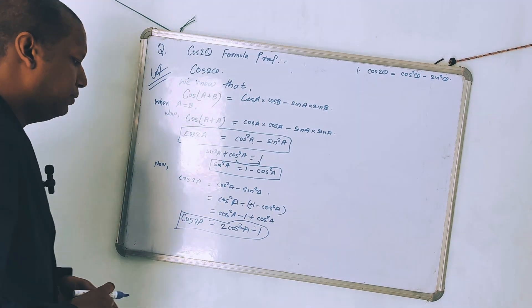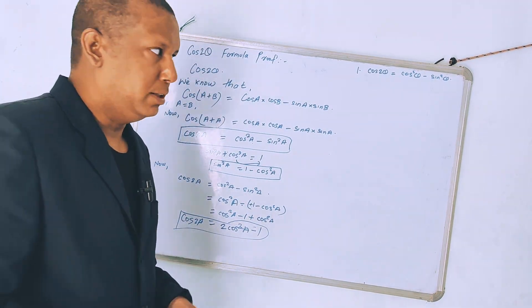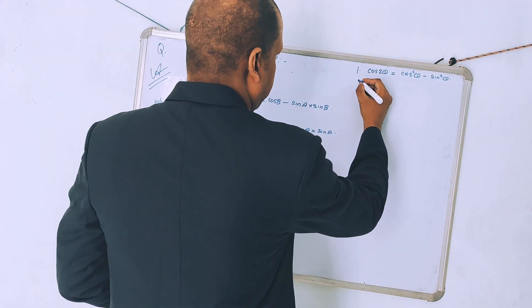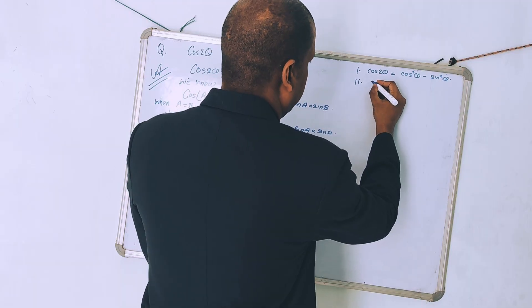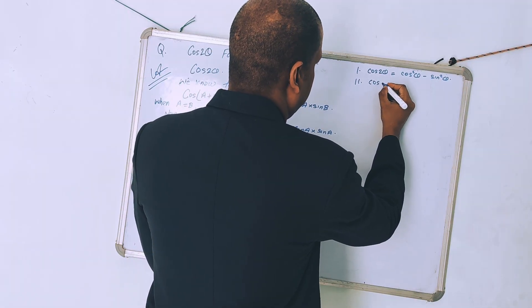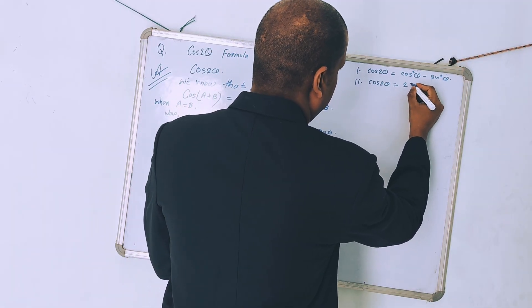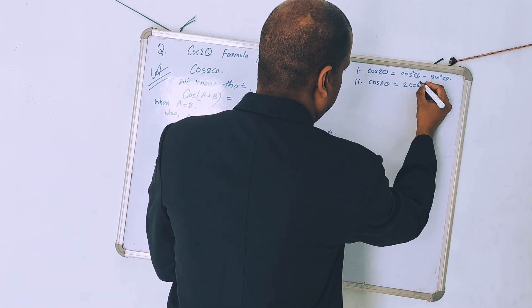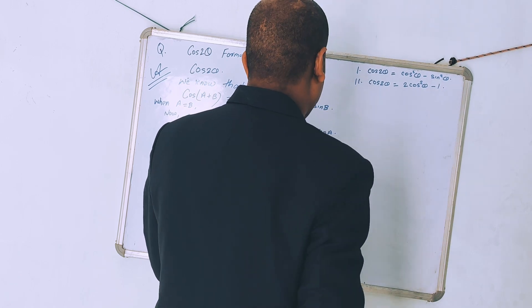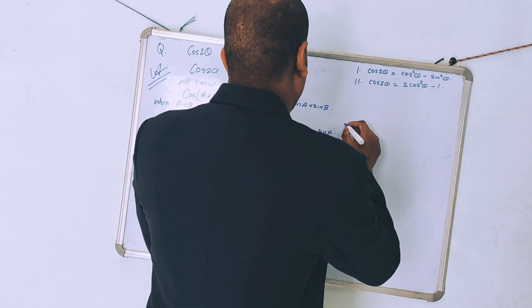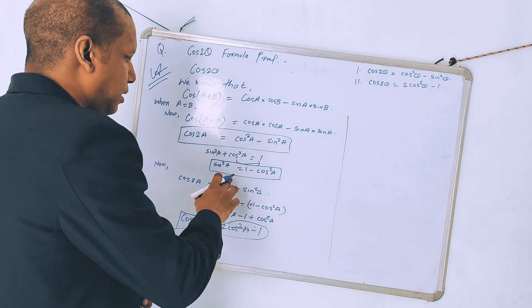So cos 2A equals 2cos² A minus 1. The second formula is: cos 2θ = 2cos² θ - 1.